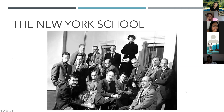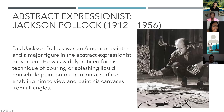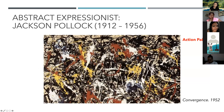The New York School was a convenient label under which to group a group of painters also known as the abstract expressionists. The most popular abstract expressionist artists were Jackson Pollock and William de Kooning. Paul Jackson Pollock was an American painter and a major figure in the abstract expressionist movement. He was widely noticed for his technique of pouring or splashing liquid household paint onto a horizontal surface, enabling him to view and paint his canvases from all angles. That dripping technique is called action painting — please remember this.